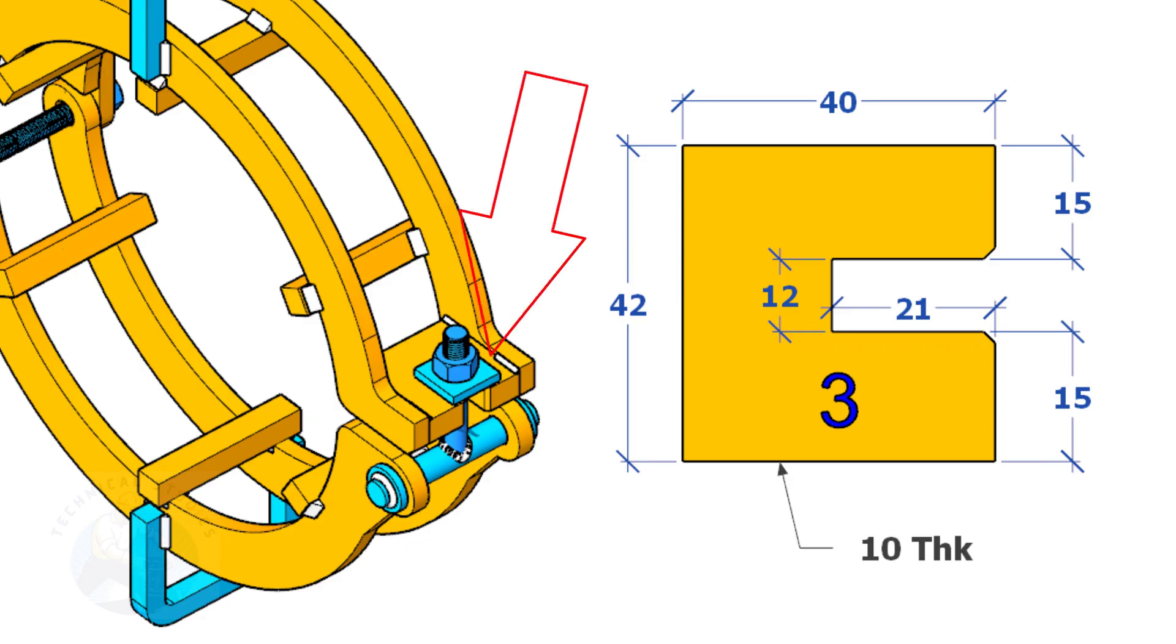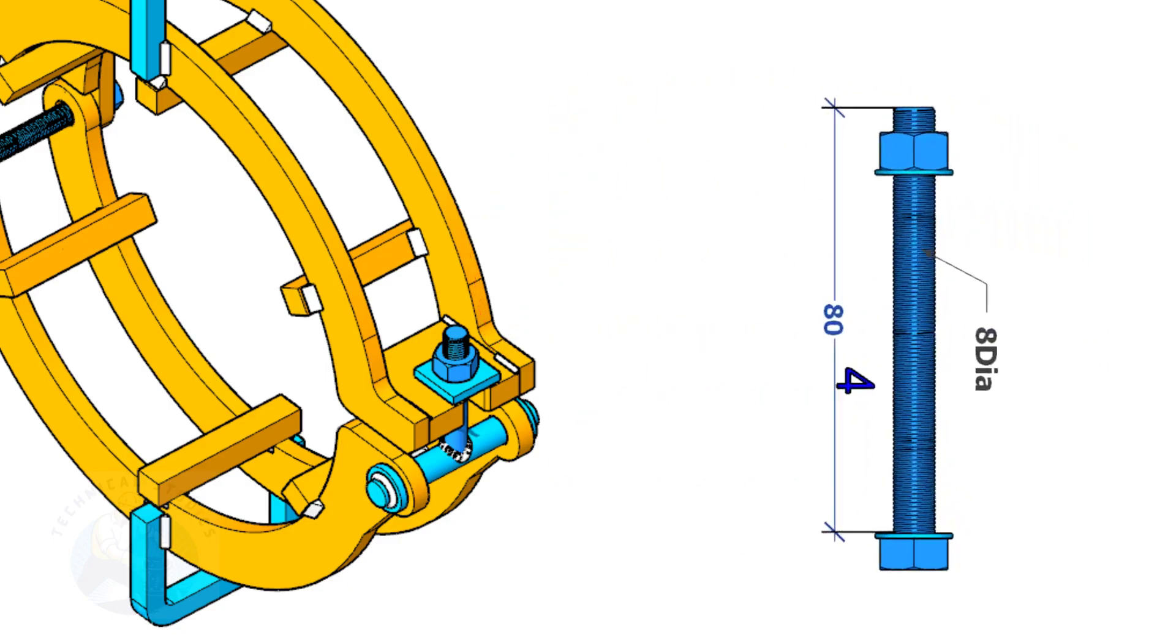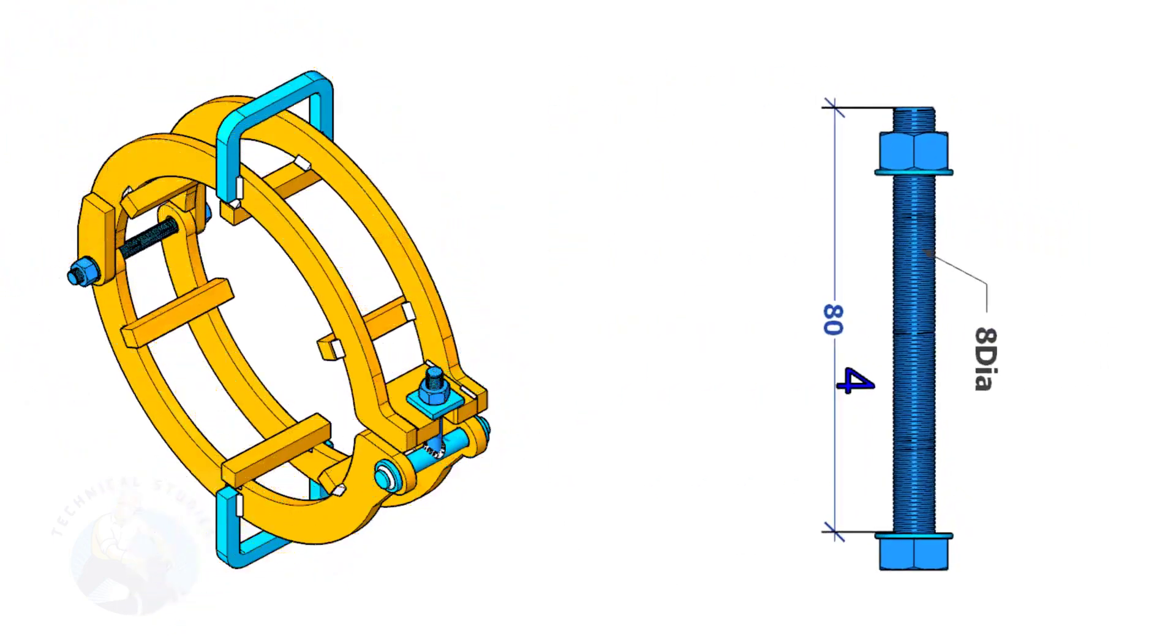Item number three sits here. Item number four is a bolt. You can use a stud bolt, or a round bar of the same size with stoppers tack welded on both ends of the rod after full assembly.